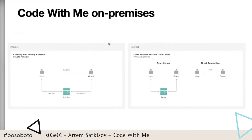Speaking of the lobby server, you can see on the pictures here a basic scheme of how traffic flows inside your private network and how creating and joining a session happens. A lobby is basically a server used to manage links — to get a link from the host and share it with guests. I'll be showing you the front end of the default lobby server a little bit later.